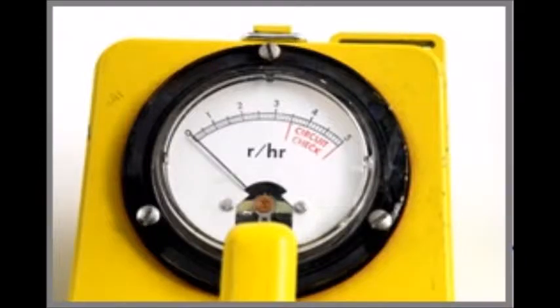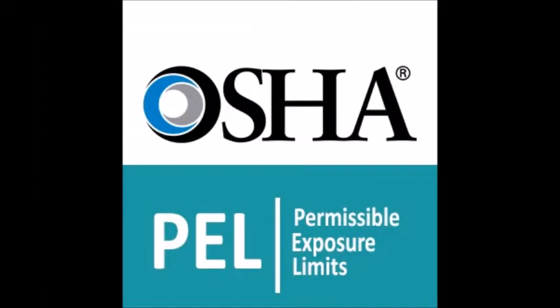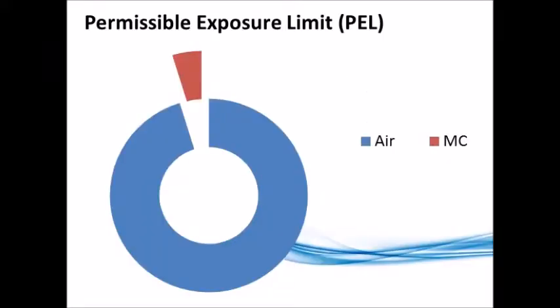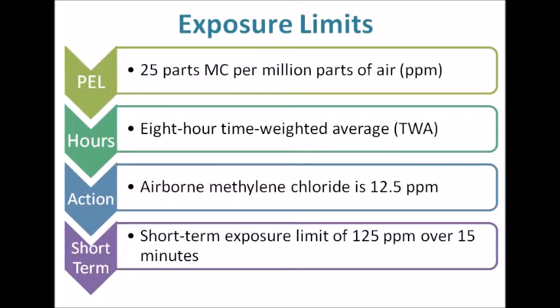OSHA allows exposure to methylene chloride up to a permissible exposure limit, or PEL. The PEL is 25 parts methylene chloride per million parts of air, based on an eight-hour average. The action level is 12.5 for medical surveillance and testing. Employees can be exposed to higher limits, but only for up to 15 minutes.